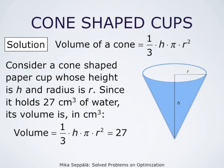From this relation it is easy to solve h in terms of r. We get h equals 3 times 27, which is 81, divided by pi r squared.